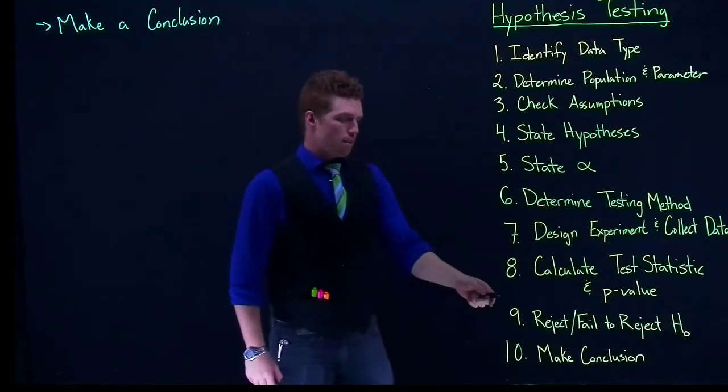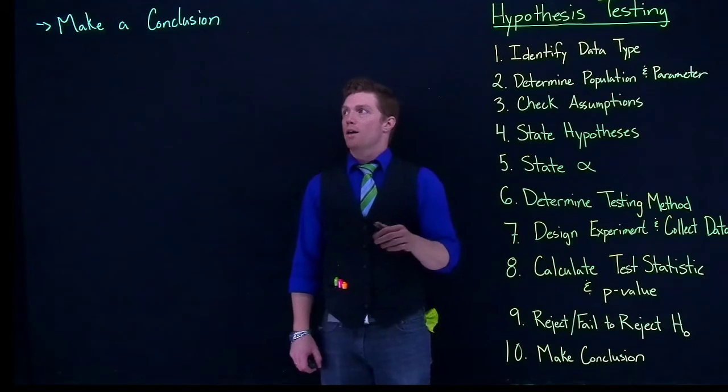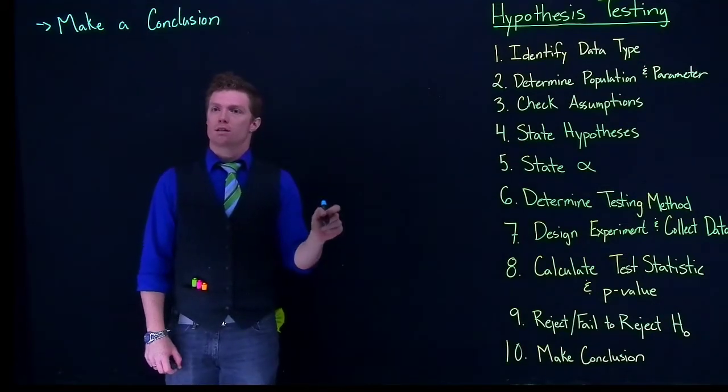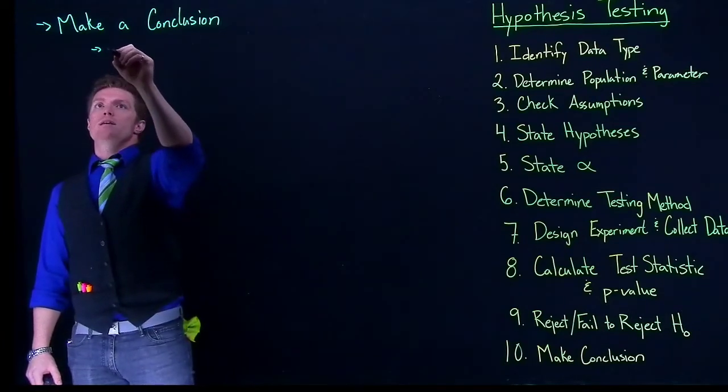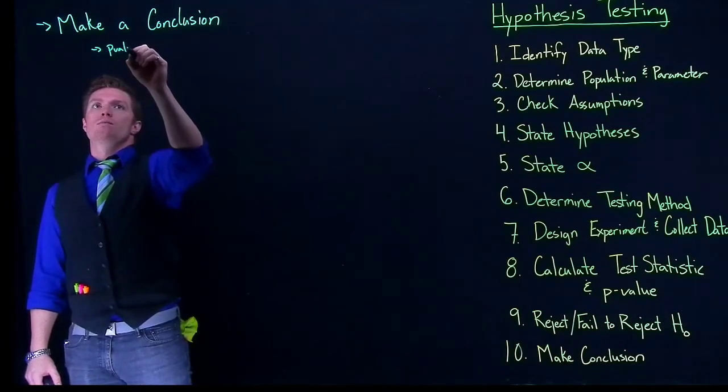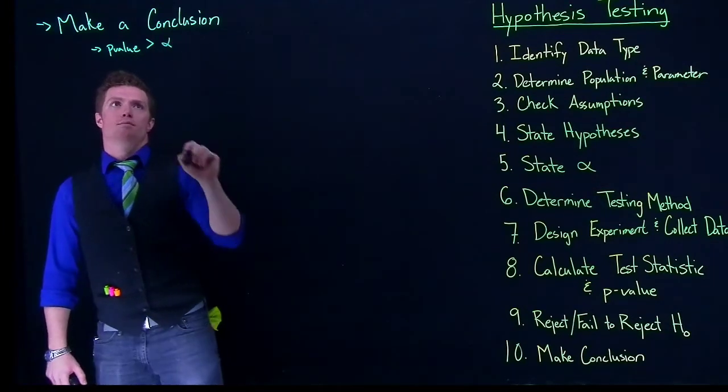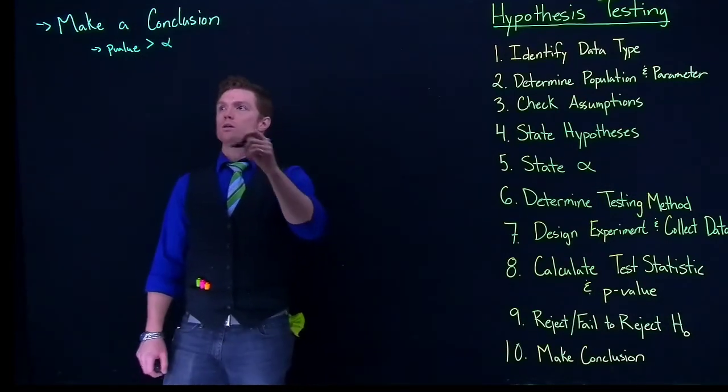So back to step nine, we either are rejecting or we are failing to reject the null hypothesis. If we have failed to reject the null hypothesis, let's start off with that one. So we'll say that p value was greater than alpha. So if that happens, here is what we could then write.